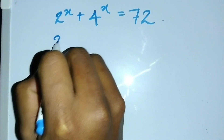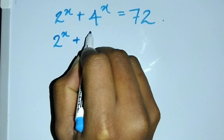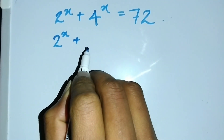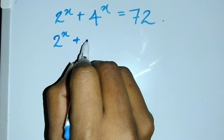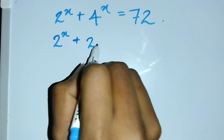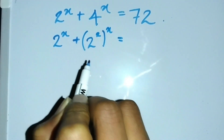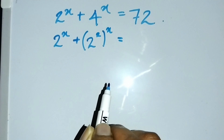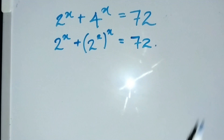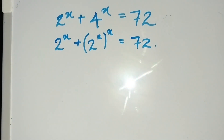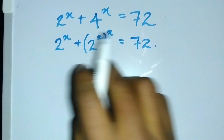I can rearrange 4^x as 2 to the second power, since 4 equals 2 squared. So I can write this as 2^x plus (2^2)^x equals 72.